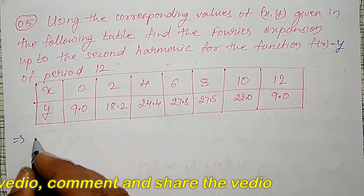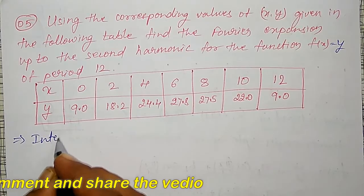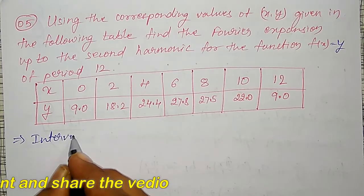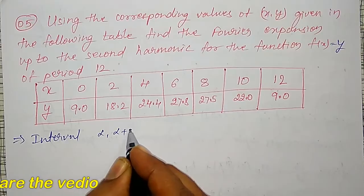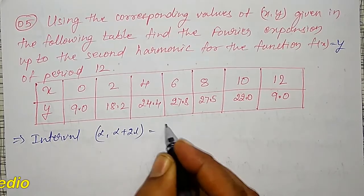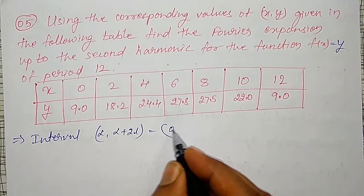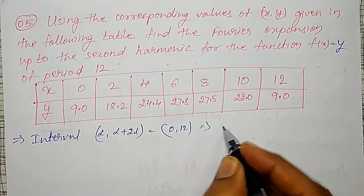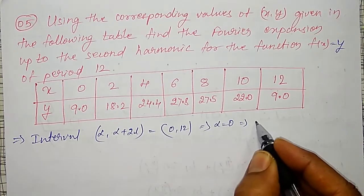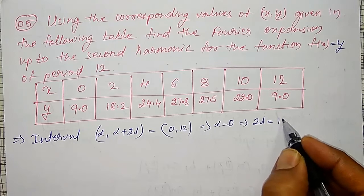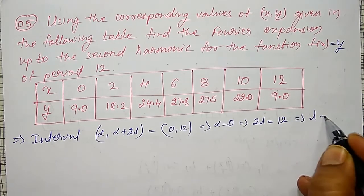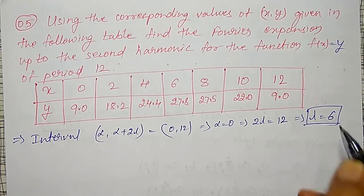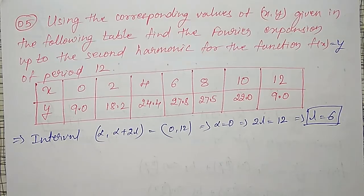Now here, my interval — that is, alpha to alpha plus 2L — is nothing but 0 to 12, which implies alpha equals 0 and 2L equals 12, which implies L equals 6. So my L value is 6, and the period is equal to 6.